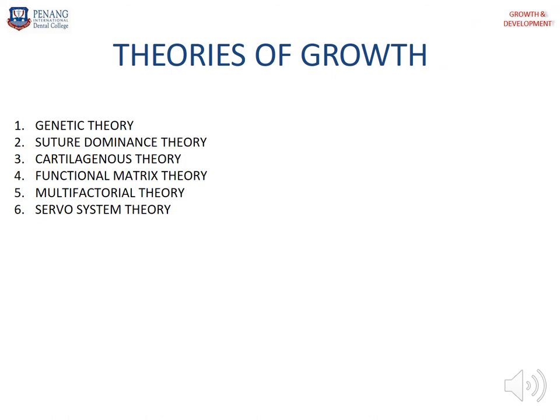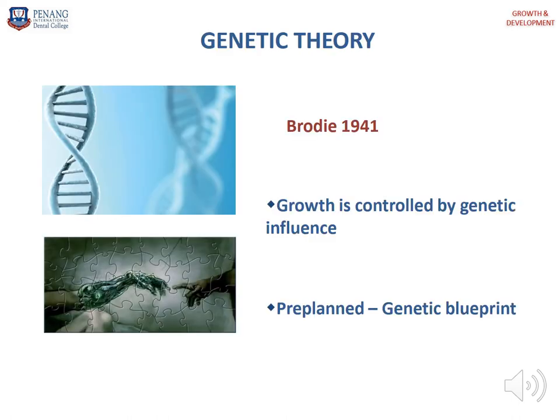Several theories have been proposed to explain the mechanism controlling growth. Initially it started with the genetic theory, followed by suture dominance theory, cartilaginous theory, functional matrix theory, multifactorial theory, and finally servo system theory. The first is the genetic theory, introduced by Brodie in 1941. Brodie suggested that growth is controlled by genetic influence — meaning the growth is controlled within the chromosomes, and the genetic blueprint is already pre-planned.